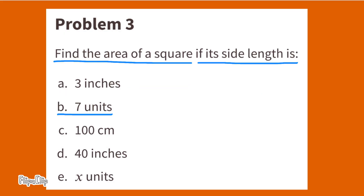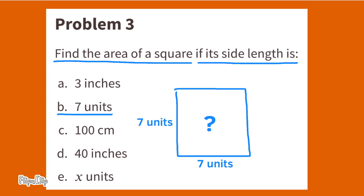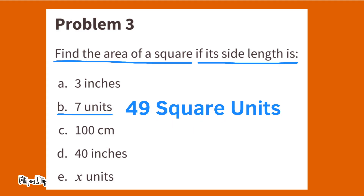Find the area of a square if its side length is 7 units. 7 times 7 is 49, so the area would be 49 square units, or 49 units squared.